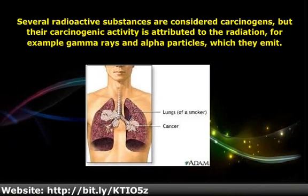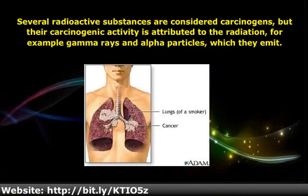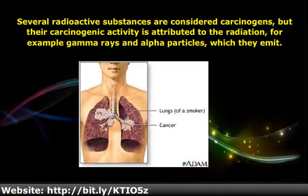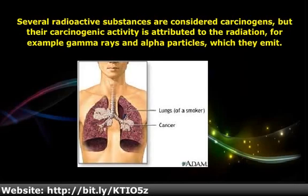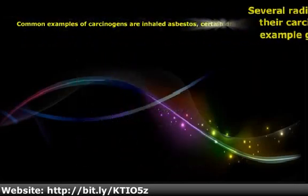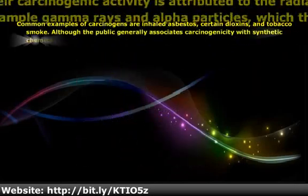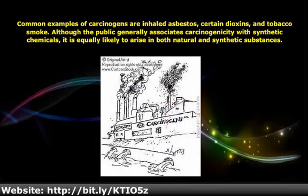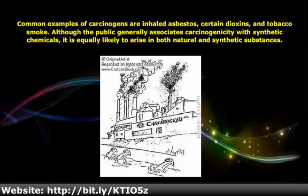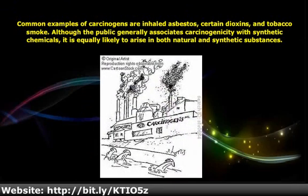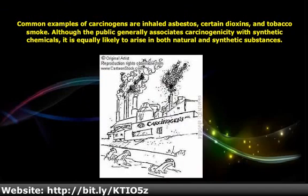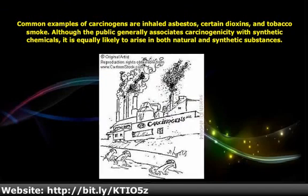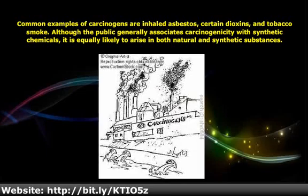Several radioactive substances are considered carcinogens, but their carcinogenic activity is attributed to the radiation they emit — for example, gamma rays and alpha particles. Common examples of carcinogens are inhaled asbestos, certain dioxins, and tobacco smoke.